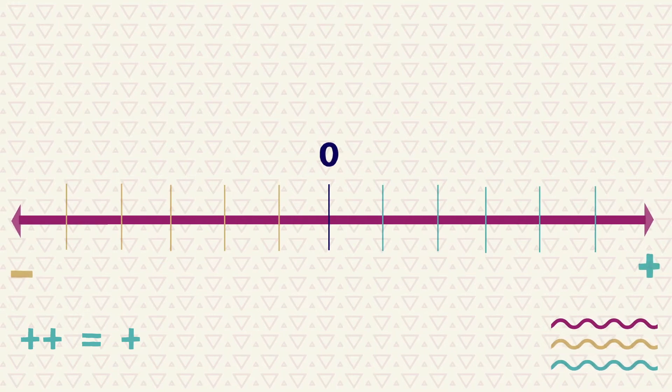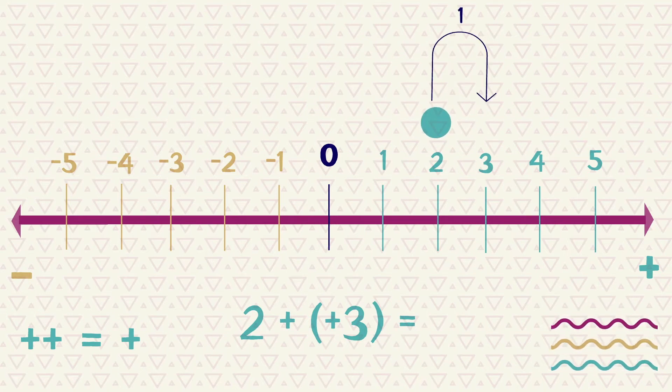Let's look at this same example on the number line. We start with the number 2 and we add a positive amount of £3 and end up at £5.